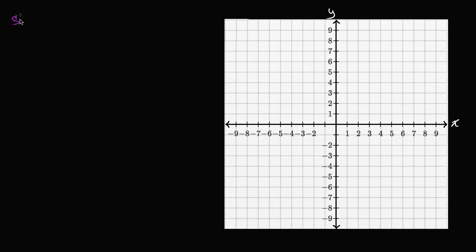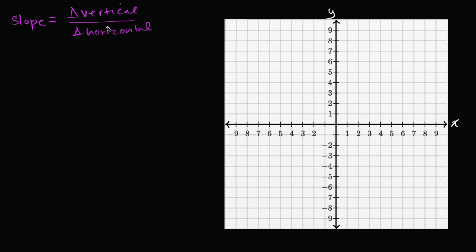Slope is defined as your change in the vertical direction — and I could use the Greek letter delta, this little triangle here, which means 'change in' — divided by change in the horizontal direction. That is the standard definition of slope, and it's a reasonable way for measuring how steep something is.